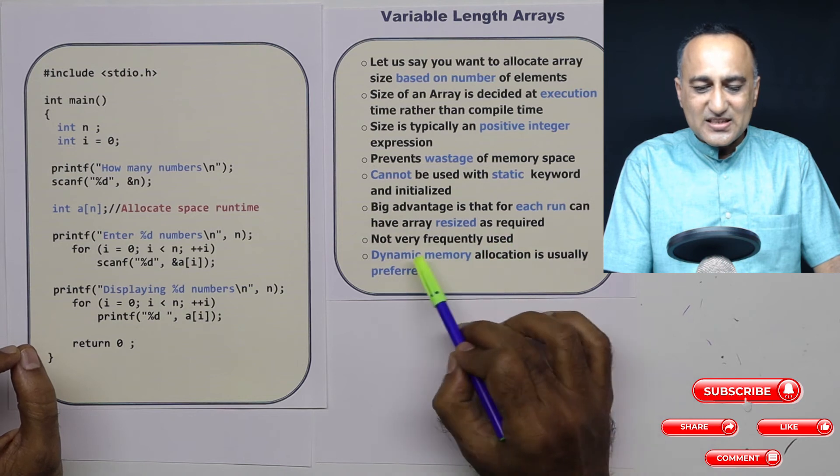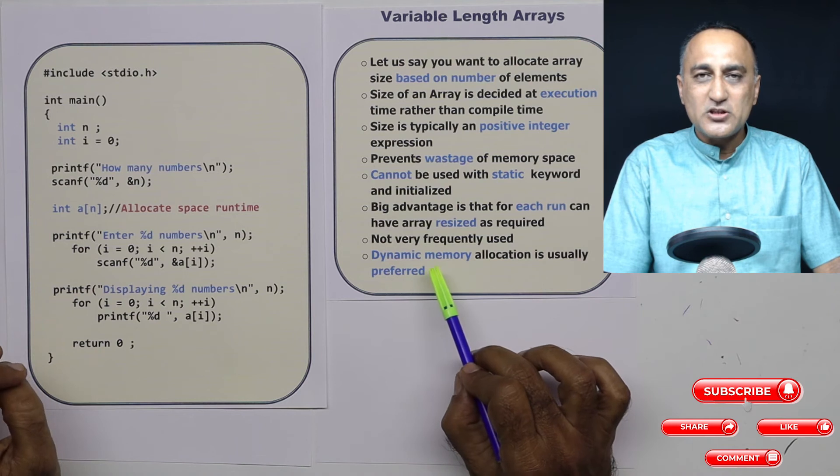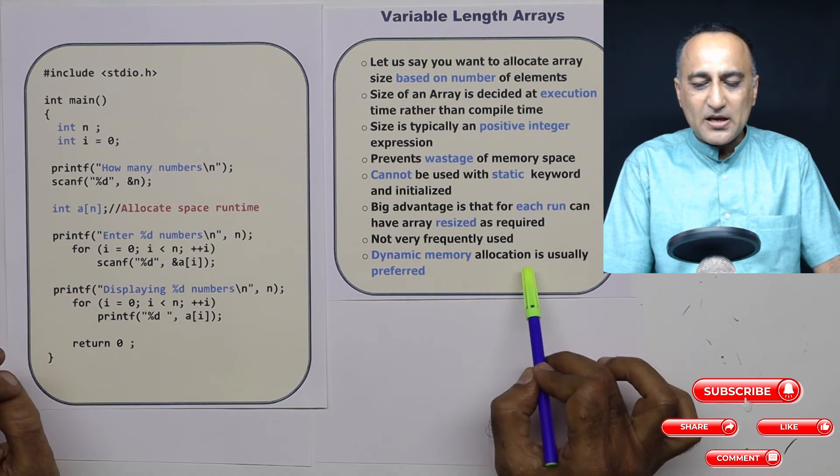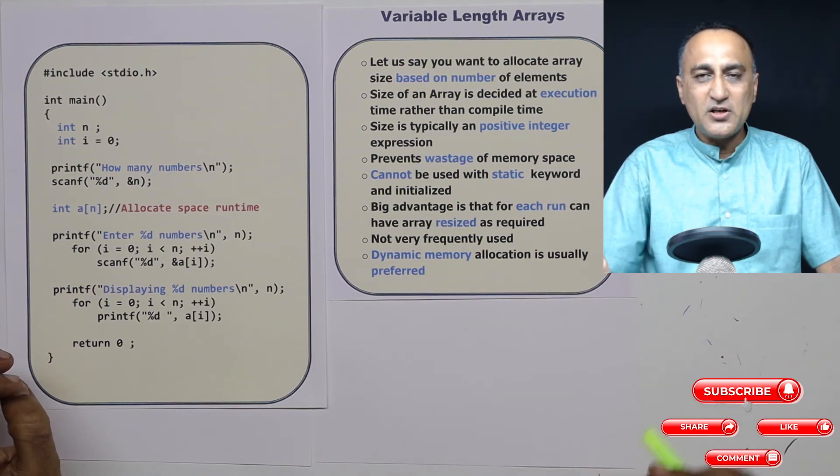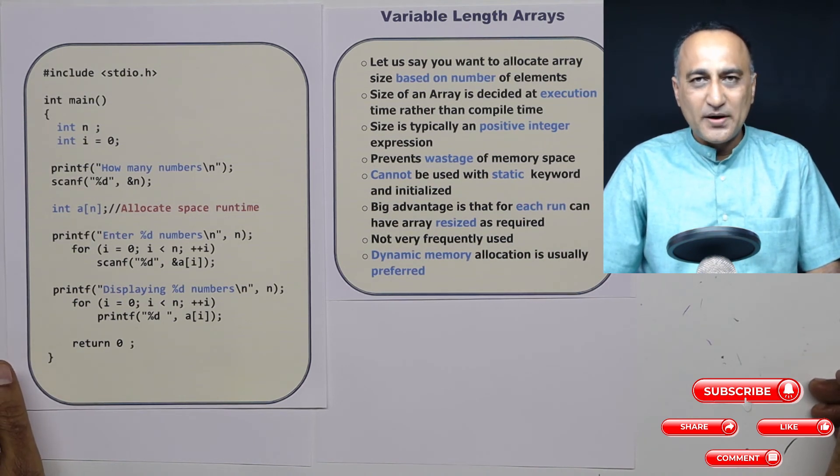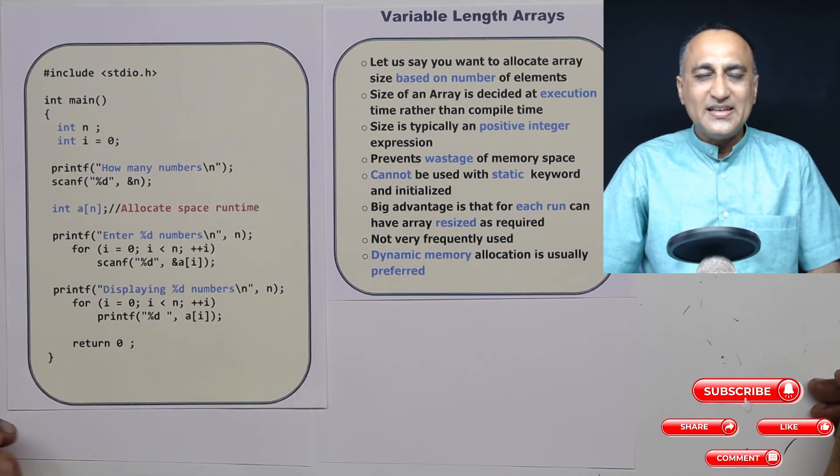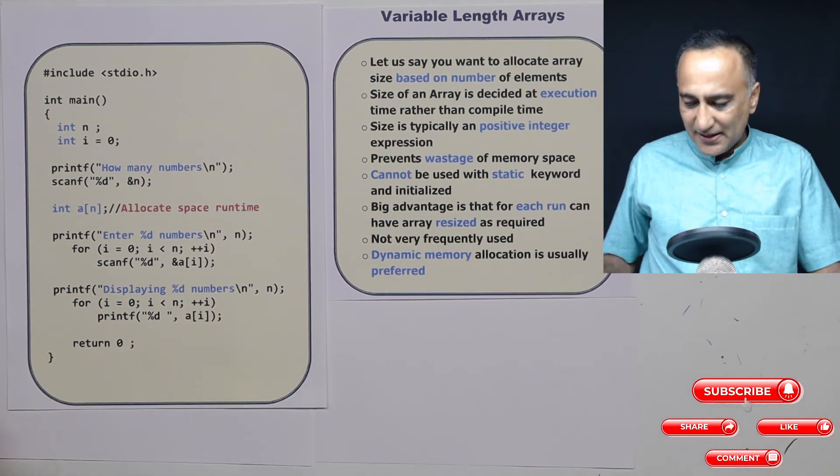But the thing is, this is not very frequently used. Because generally in C we prefer to use a mechanism of dynamic memory allocation, which we will be discussing as we talk about pointers in the subsequent video lectures. But this is just a good concept to help you know that there is a possibility to create variable length arrays.